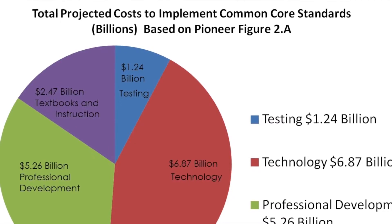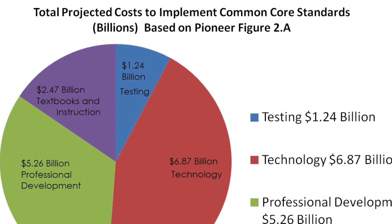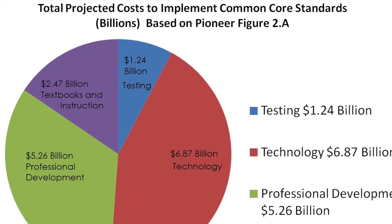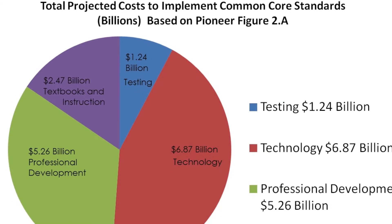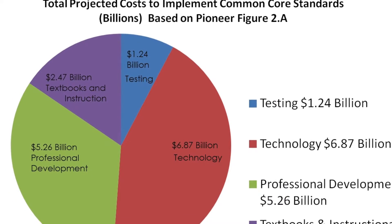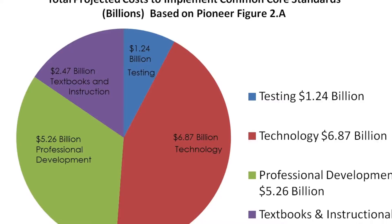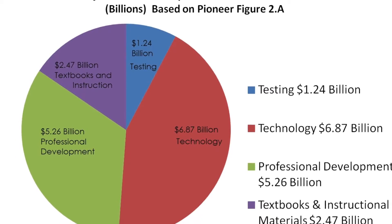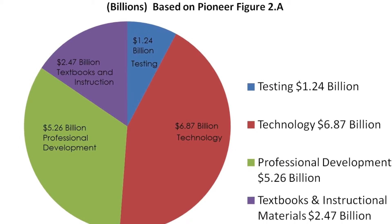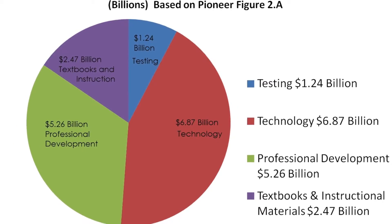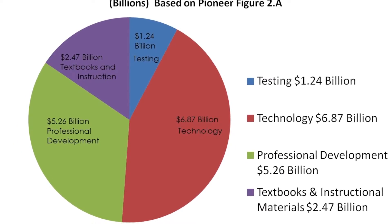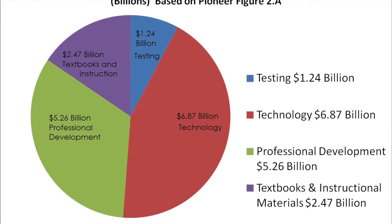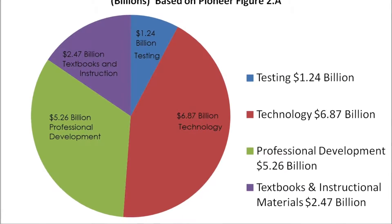The Common Core was developed by building on the best state standards in the United States, examining the expectations of other high-performing countries around the world, and carefully studying the research and literature available on what students need to know and be able to do to be successful in college, career, and life.